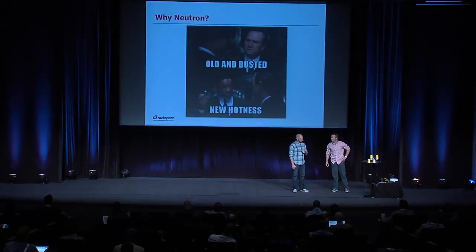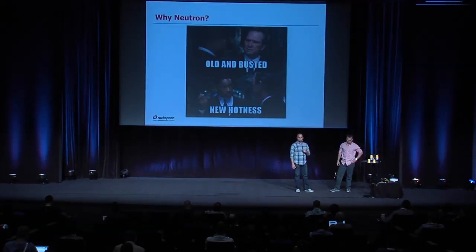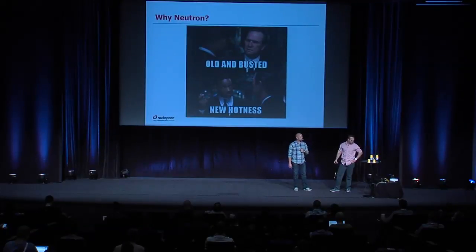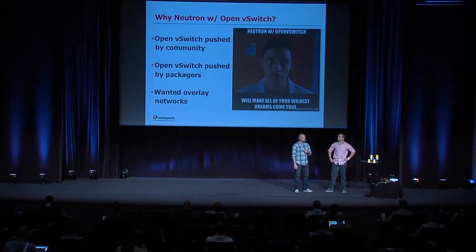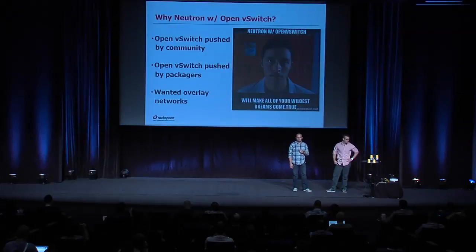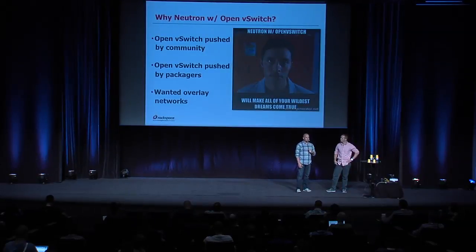People asked us, why Neutron? At the time, Nova Network was listed as being deprecated in the next release — that's been the cycle for the last two years. Nova Network was referred to as old and busted, and Quantum was the new hotness; everybody was moving to Quantum. As for why we chose Neutron with Open vSwitch: OVS is heavily pushed by the community on OpenStack.org. Most installation documentation relates to OVS, with not a lot of mention of Linux Bridge. Packagers prefer Open vSwitch, and we thought we wanted overlay networking — that's what our customers were asking for.